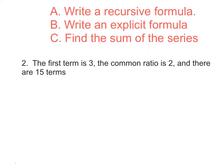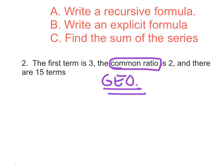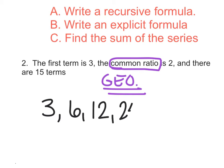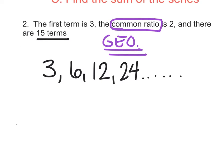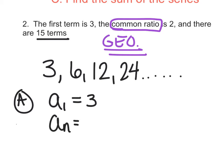Let's try a second example with the same directions. This time the first term is 3, the common ratio is 2, and there are 15 terms. Is this arithmetic or geometric? Hopefully your gut says: I see common ratio, therefore this is geometric — which simply means I'm multiplying. The first term is 3 and I'm multiplying by 2, so: 3, 6, 12, 24, and so on up to 15 terms. For part A, the recursive rule: a sub 1 equals 3, and a sub n equals a sub n minus 1 times 2.